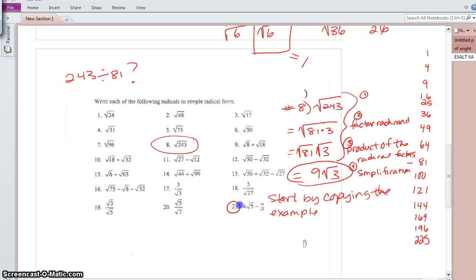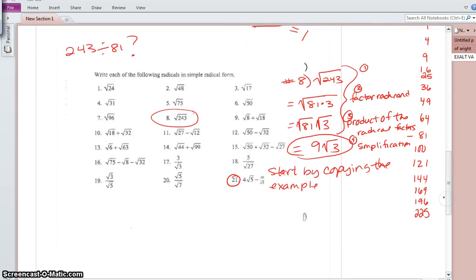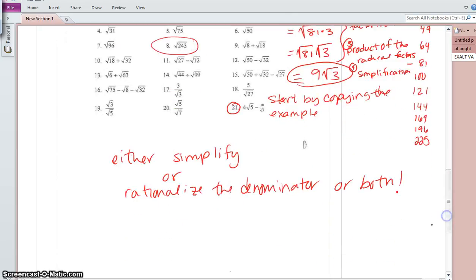And number 21 is an interesting one that will require some subtraction and kind of this denominator busting. It's called rationalizing the denominator. So you will either simplify, or you will rationalize the denominator, or both. And you may need to combine like terms in an addition or subtraction problem. Okay, do a good job on these. Pace yourselves so that you're having your work checked. These will be due on Tuesday.